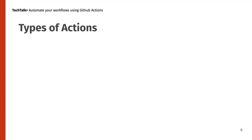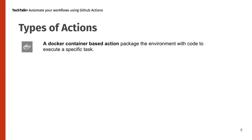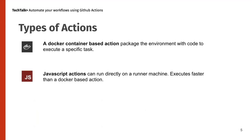There are different types of actions. Docker container-based actions package the environment with code to execute a specific task. JavaScript-based actions can run directly on a runner machine and execute faster than Docker-based actions, because Docker container-based actions require building the container from a Dockerfile — you have to wait for the container to start up and build. JavaScript actions are developed on Node.js and are readily available to run.